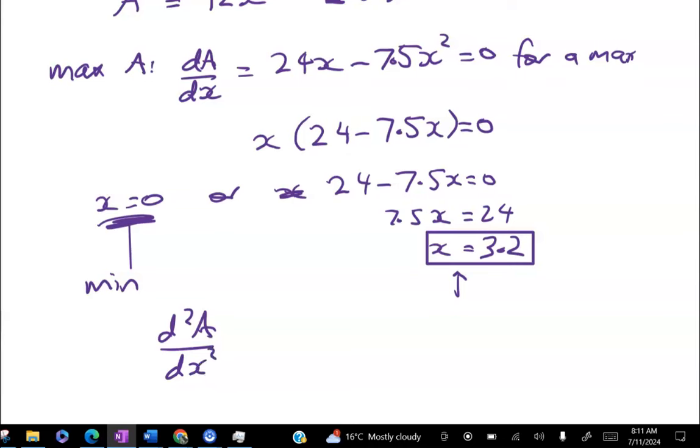I haven't seen a marking schedule yet. I'd be surprised if they do want that, because they haven't seen it, but it's easy enough to do. So the second derivative test here gives me d²A/dx² = 24 - 15x. And at this value, let's see what it gives me.